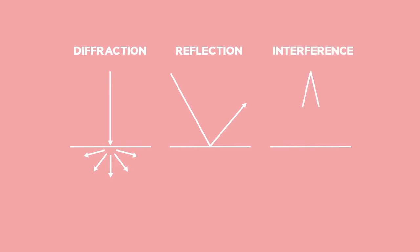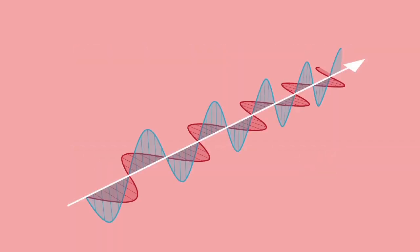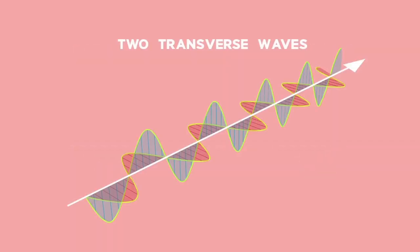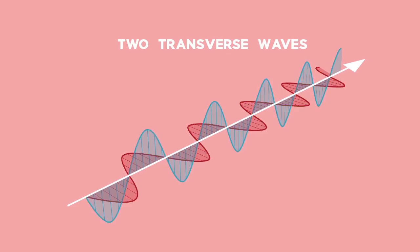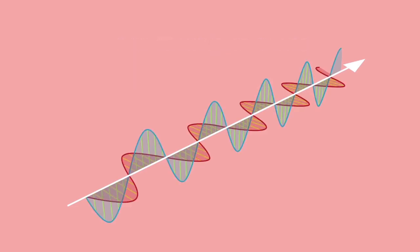Light has many of the properties of waves, like diffraction, reflection and interference. Electromagnetic radiation is a set of two transverse waves that move at right angles to each other and are produced by the movement of a charged particle.